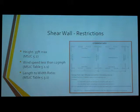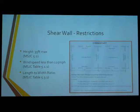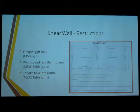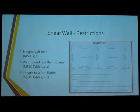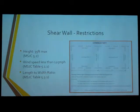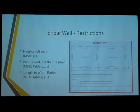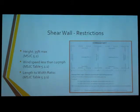Some basic restrictions when designing your shear wall: you have a maximum height of 35 feet unsupported, you need to make sure it's built in a wind speed area less than 125 miles per hour, and you're going to have a length-to-width ratio requirement. That ratio will vary based on what type of masonry you're using, and you can find it in that table.